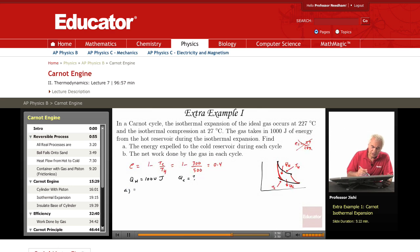To do that, we know that E also is 1 minus QC over QH. So this means that QC over QH is just 1 minus E. 1 minus 0.4 is 0.6. So QC is 0.6 times QH. QH is 1000, so this is 600 joules expelled.